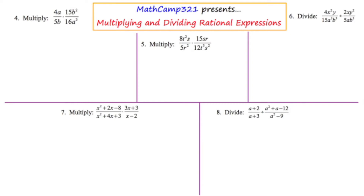We're asked to multiply 4a over 5b times 15b squared over 16a cubed. There are a couple different strategies when looking at a multiplication problem like this. One strategy is to multiply across on the top and across on the bottom and then simplify. But another strategy is to cross cancel. It doesn't matter which strategy you use — either will yield the same answer if done correctly.